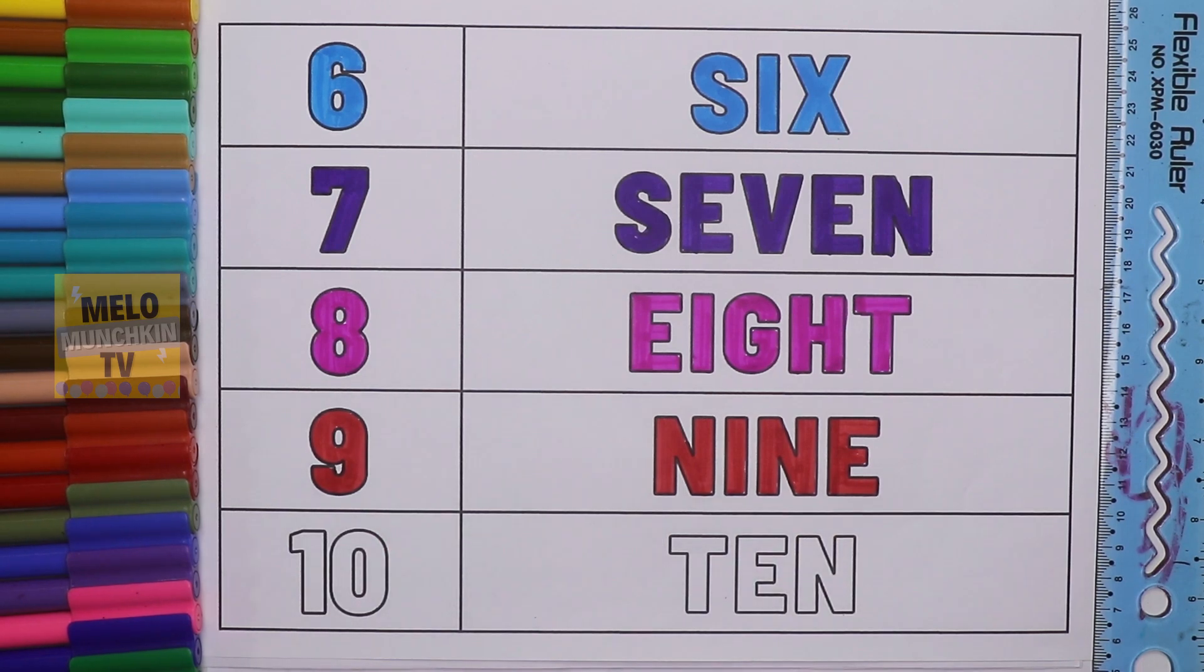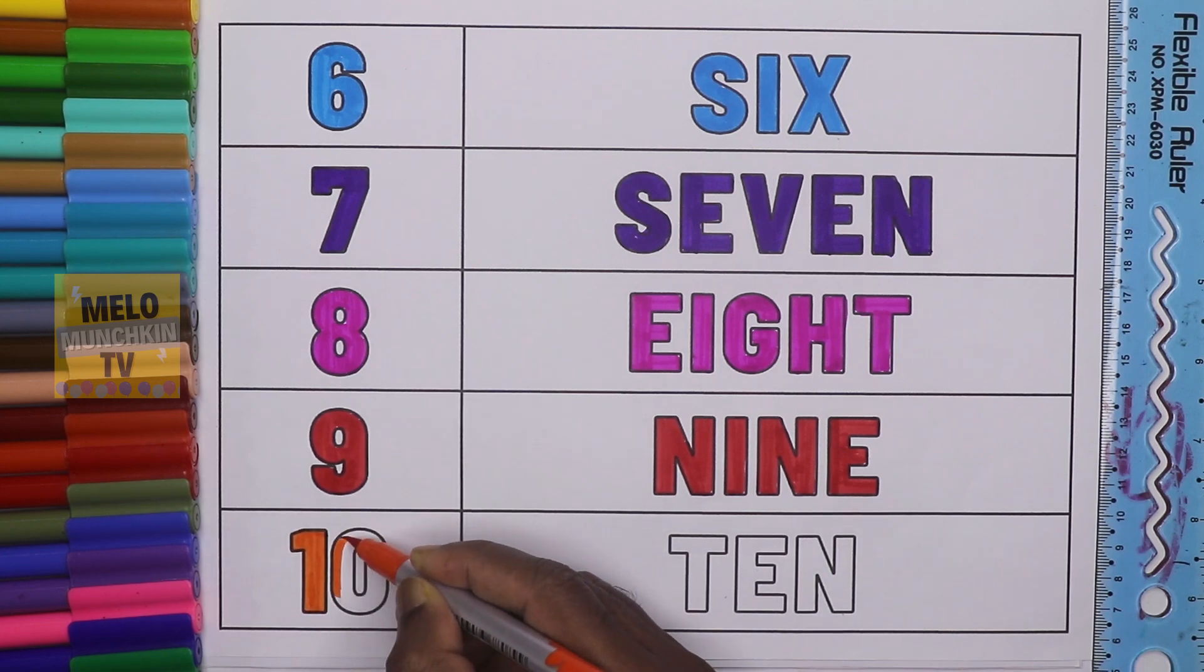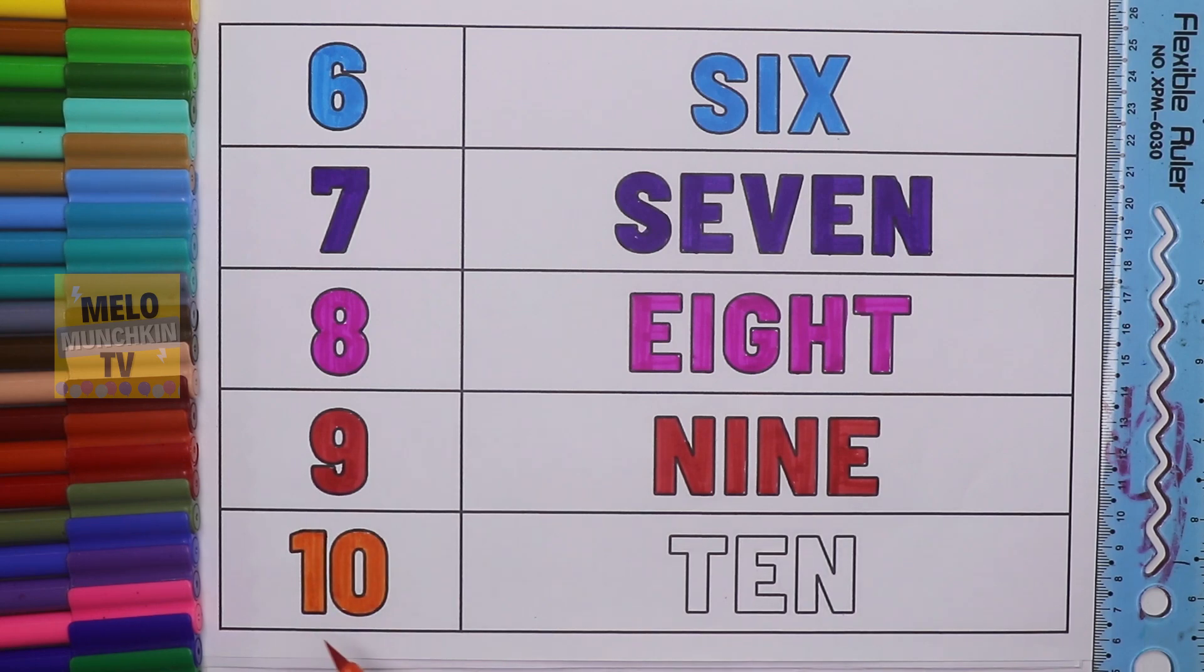And lastly, I'll use orange color to write the number ten. This is number ten. Ten. Let's see the spelling of number ten.